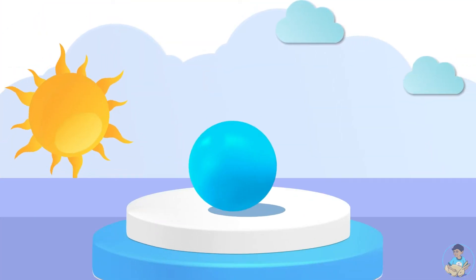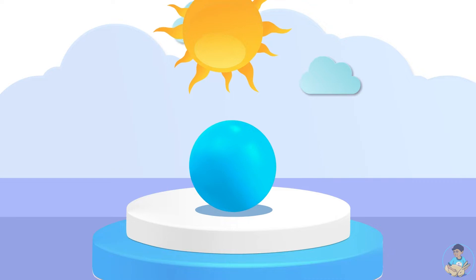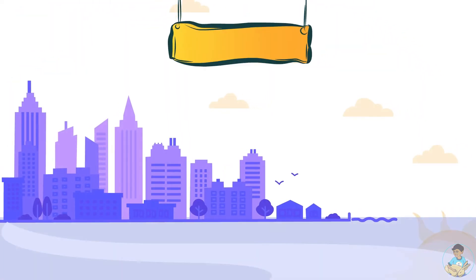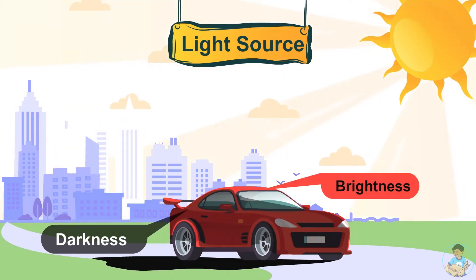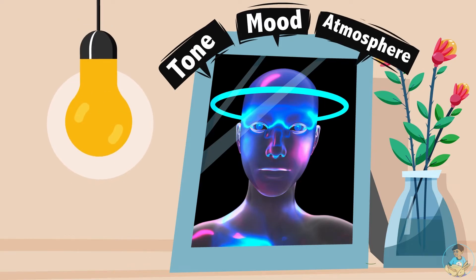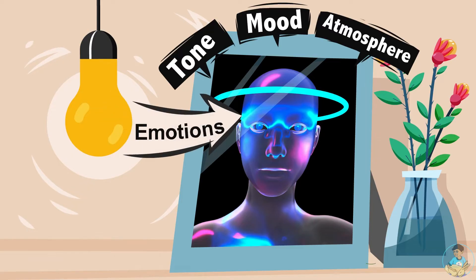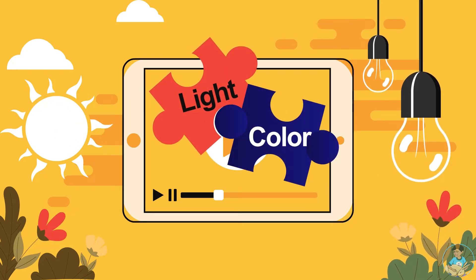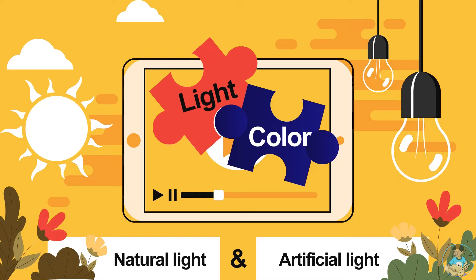The way we see an object is dependent on how it is illuminated by the available light source. Light not only determines the darkness or brightness of an object, but also the tone, mood, and atmosphere of your photograph. Light brings emotion into your photo. We will cover the impact of light and color in a later video in this series, but for now let's understand natural and artificial light.